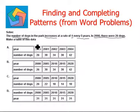Now here we see that in 2000 there were 26 dogs. After every five years, the number of dogs is increased by four. So now we have two quantities over here, that is year and number of dogs. So the first year that is given to us is 2000 and we are given that there were 26 dogs in that year.